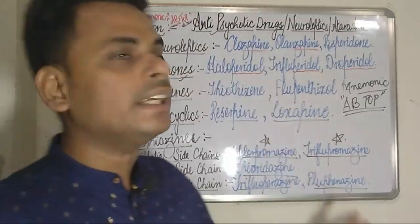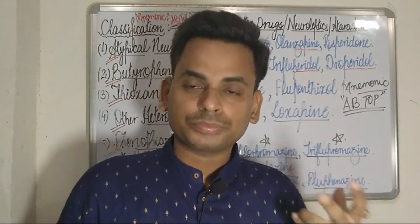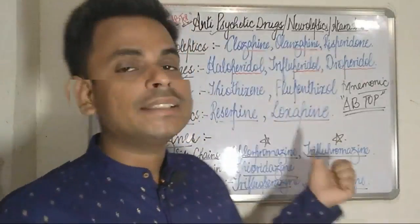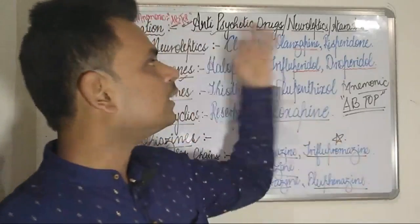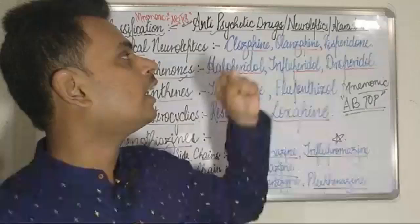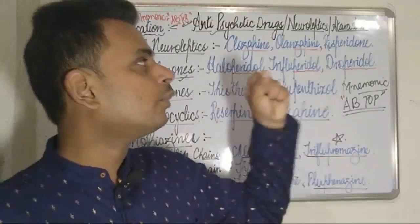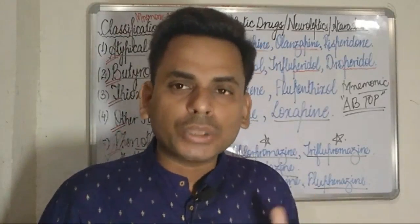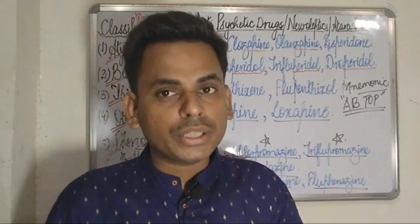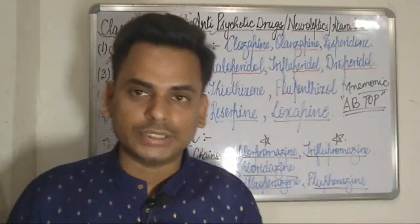Before getting into the detail of the classification and the mnemonics to memorize the antipsychotic drugs, I would like to give just a brief understanding of neuroleptics and ataractics. Neuroleptics are those drugs which are going to reduce nervous tension by depressing the nerve functions.